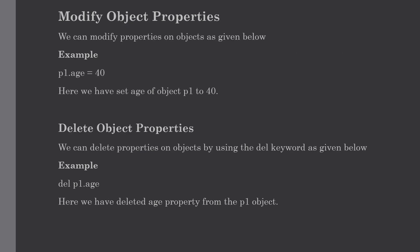Our first topic is how to modify the object properties. We can modify the properties as shown in this example where we have modified the age of object p1 to 40. First we have to create the class object and use the init function to assign the values to the object properties, as we discussed in the previous lectures. Let me show you with some simple examples.